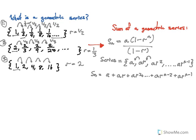Now we can start doing some algebra to derive our equation. Let's pull out an a from each of these terms and reverse the order. So our sum is going to be equal to a — which we pulled out as a common factor — times r to the n minus one, plus r to the n minus two, all the way to r squared, plus r, plus one.